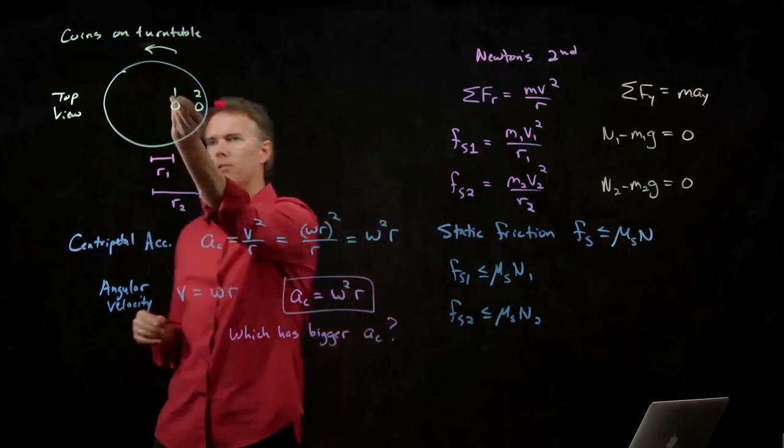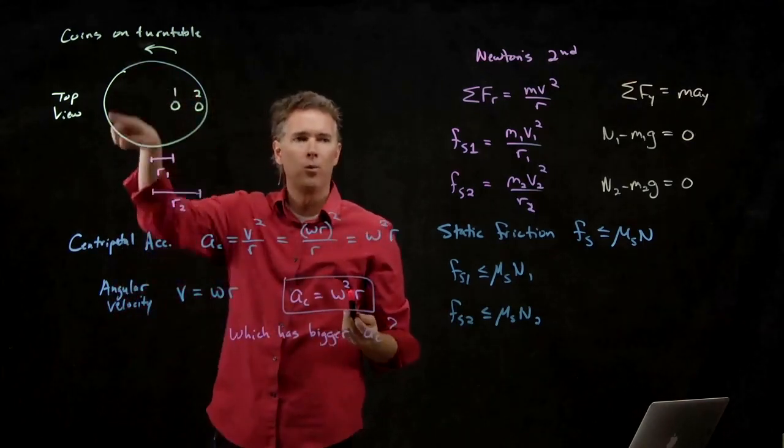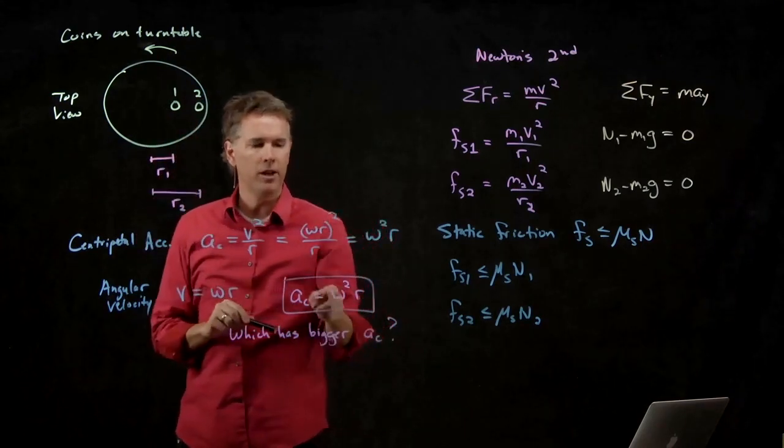Right? The angle is a full circle, which is 2 pi. And so coin 1 would be 2 pi radians per second for its omega.